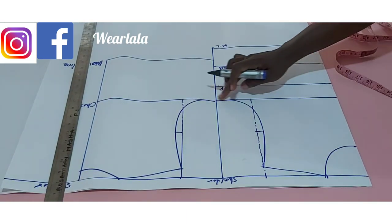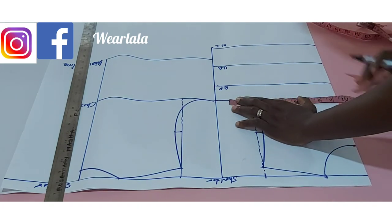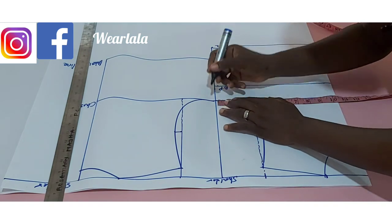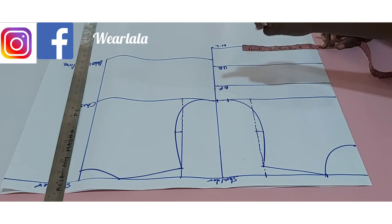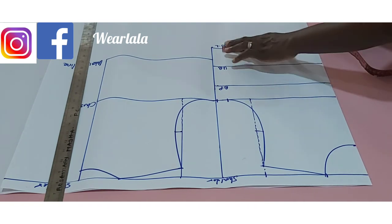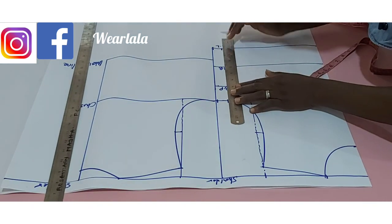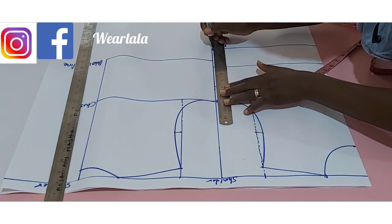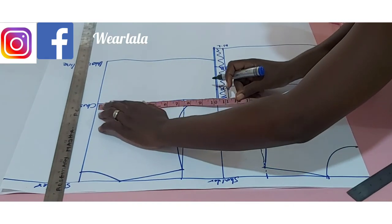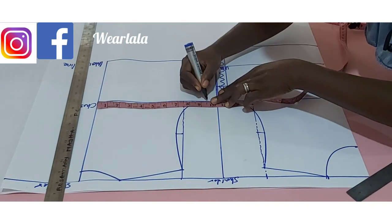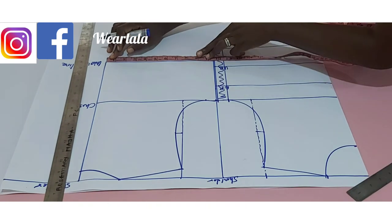Now we'll look at the bust span. Before that, I'll mark a quarter of my bust circumference on the chest line — that's 9.5 — then one inch for side seam allowance. On the waistline for the front, I'm marking a quarter of my waist circumference, which is 7.5, plus 2 inches for the dart we'll be using, then one inch for side seam allowance. For the back on the chest line, I'll mark a quarter of the bust circumference plus one inch for side seam allowance.